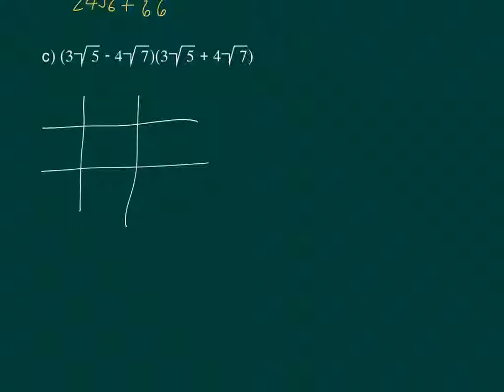So here I've got 3 root 5. And here I've got minus 4 root 7. And then 3 root 5 and plus 4 root 7.